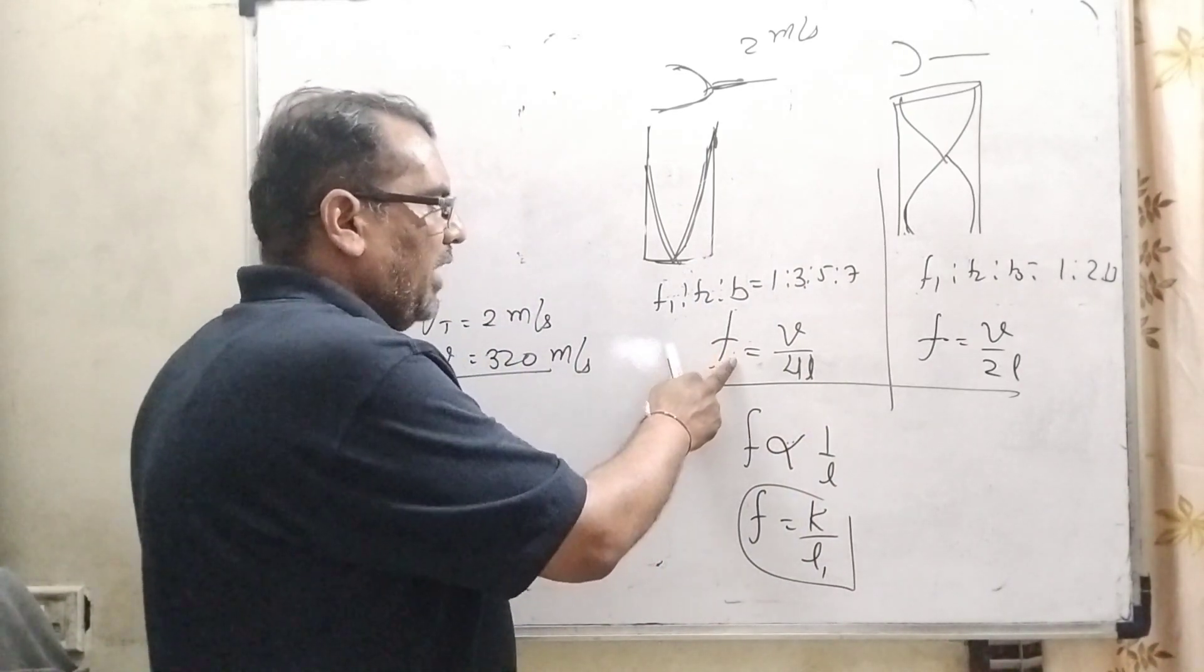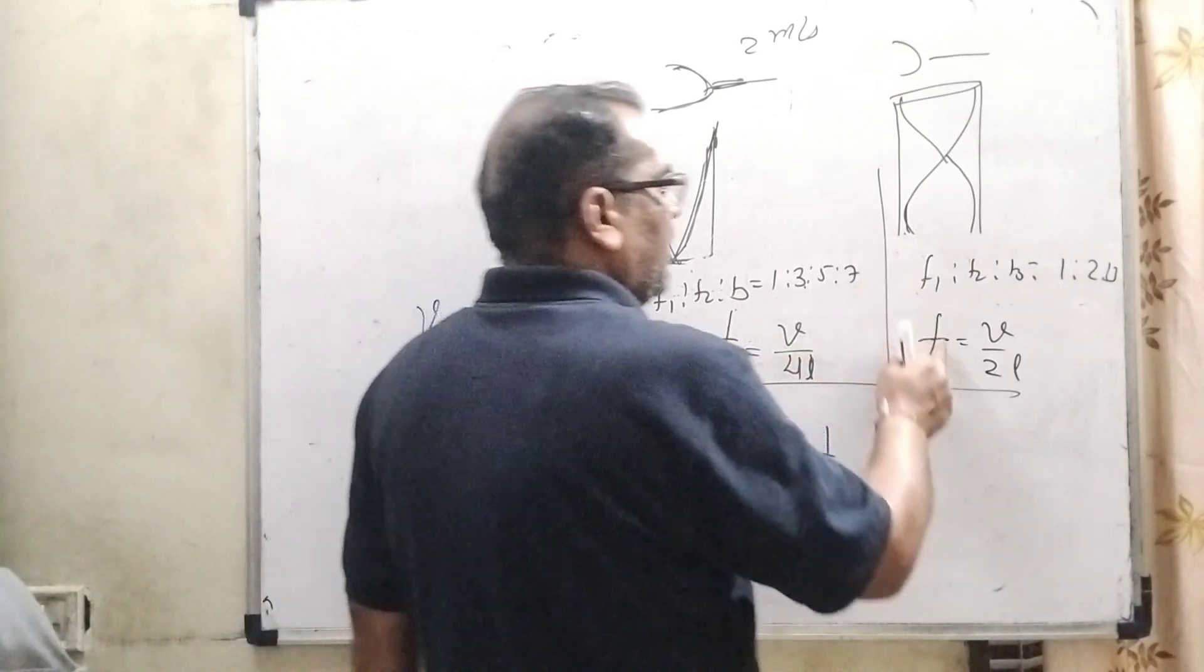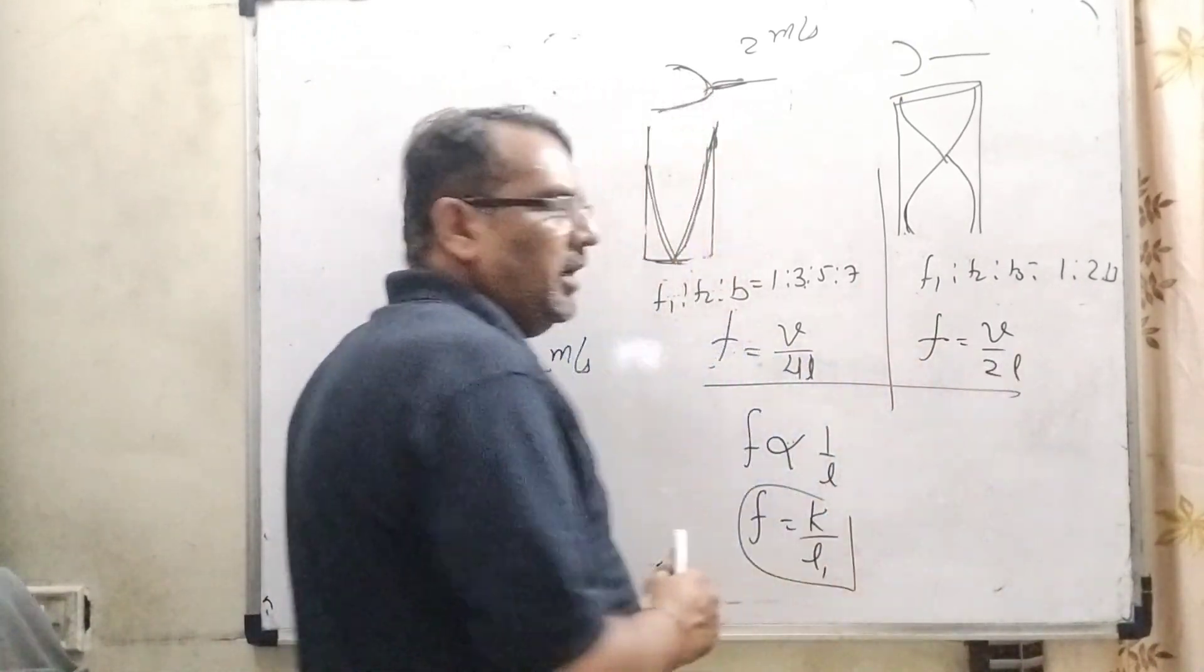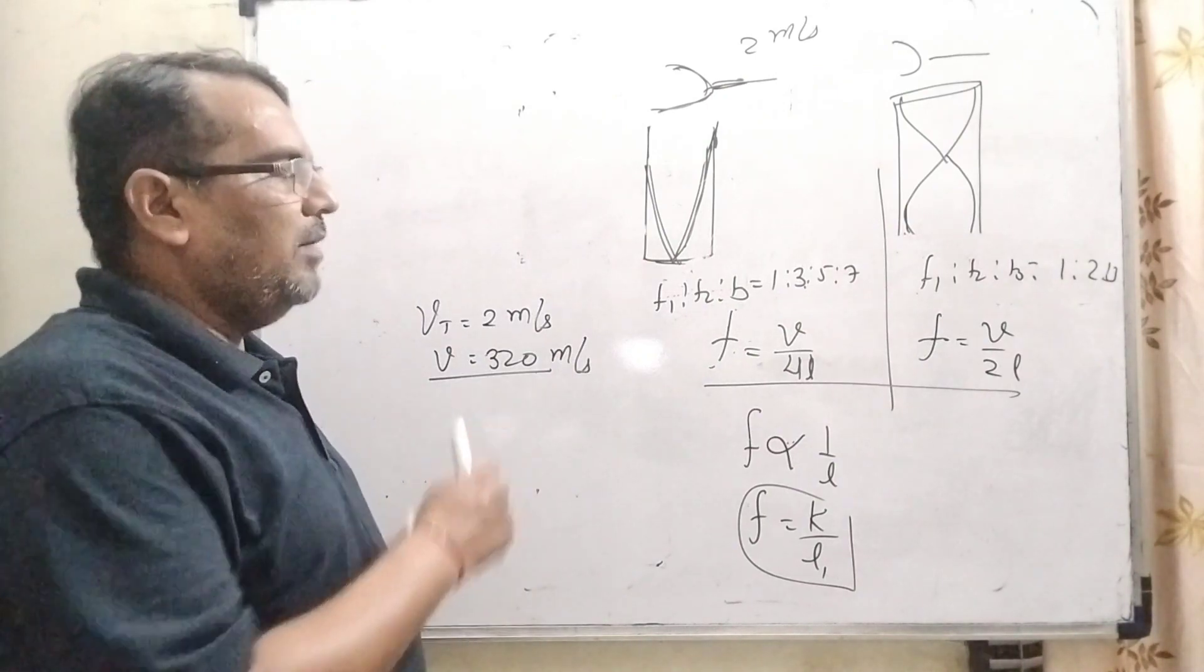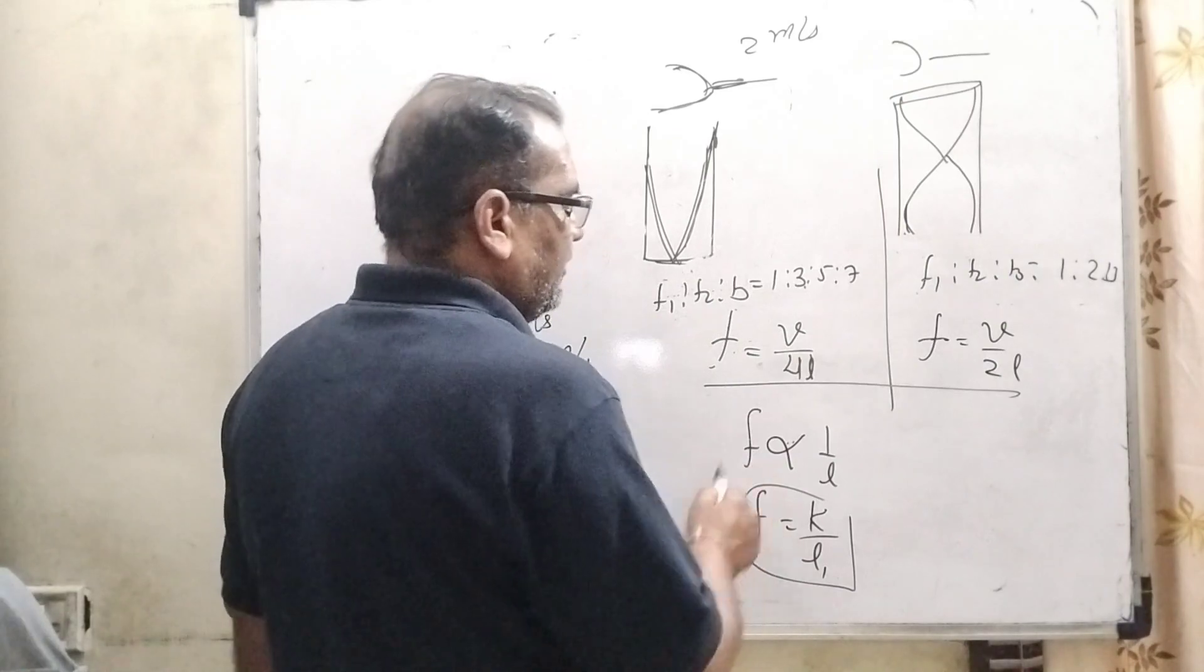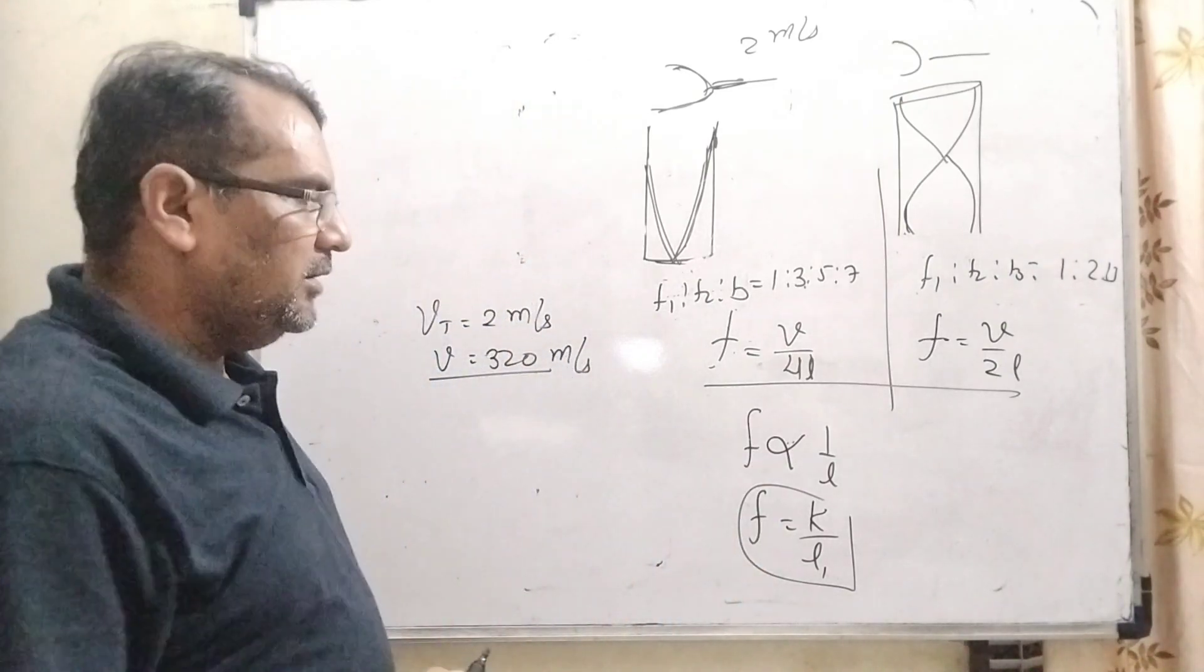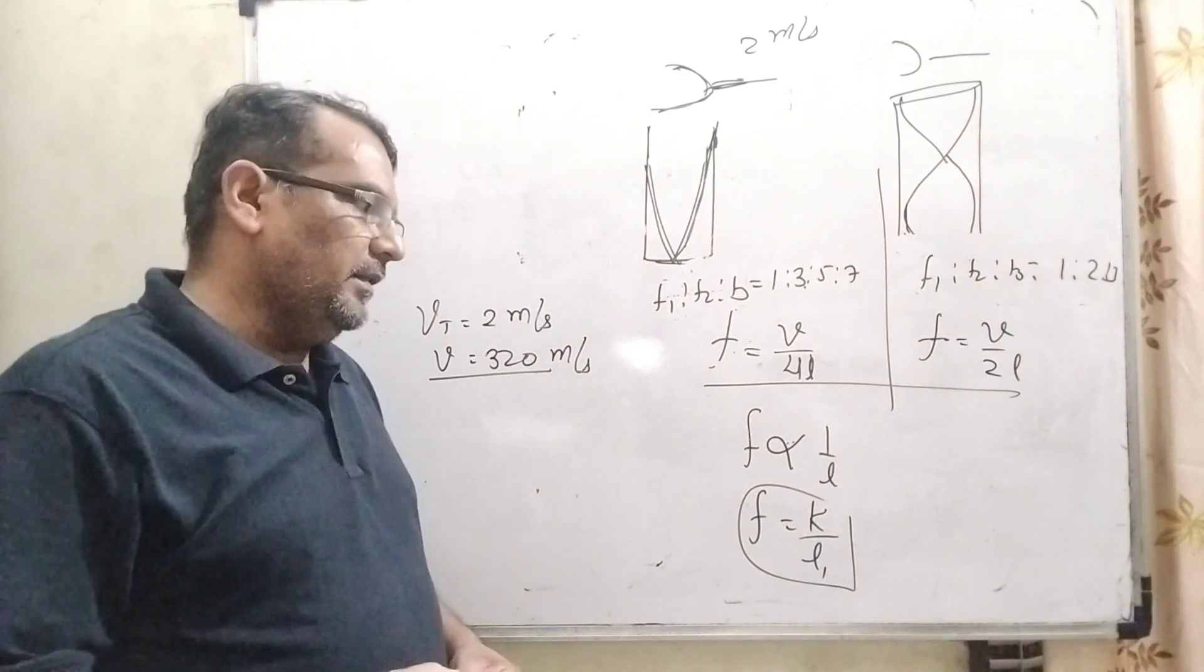For a closed organ pipe, the frequency equals V by 4L, and for an open organ pipe, frequency equals V by 2L. Here V is the speed of sound in air and L is the length of the organ pipe. In general, frequency is inversely proportional to length. Then F equals K by L1, where L1 is the initial length.